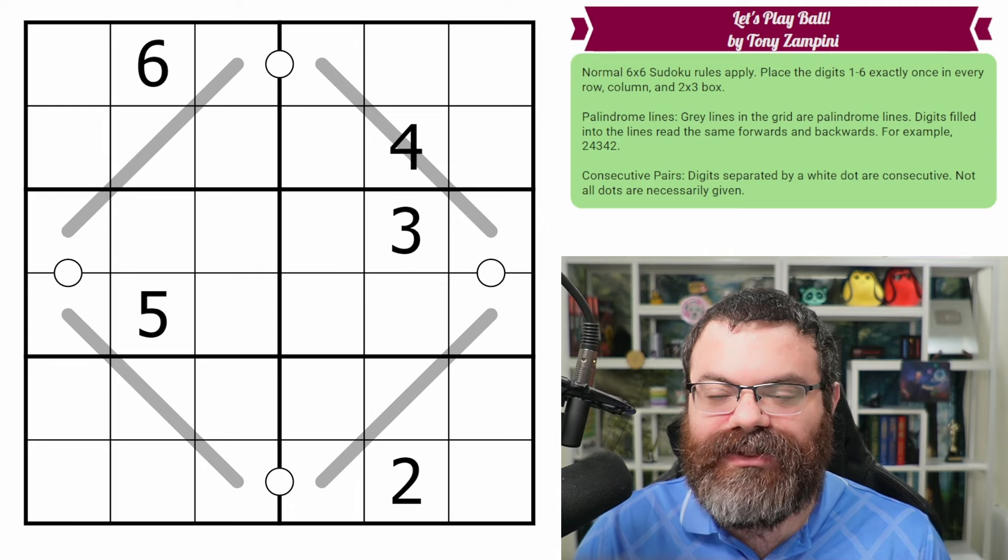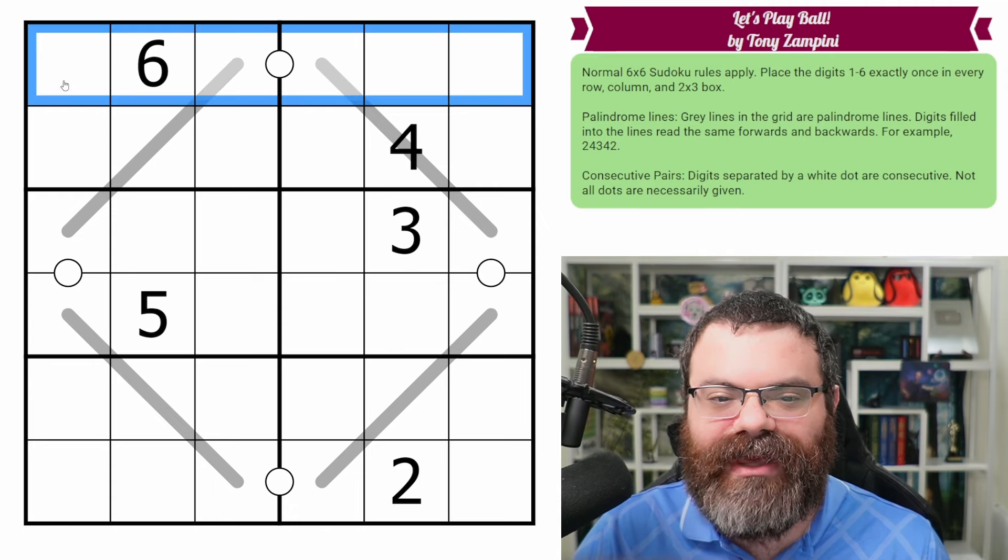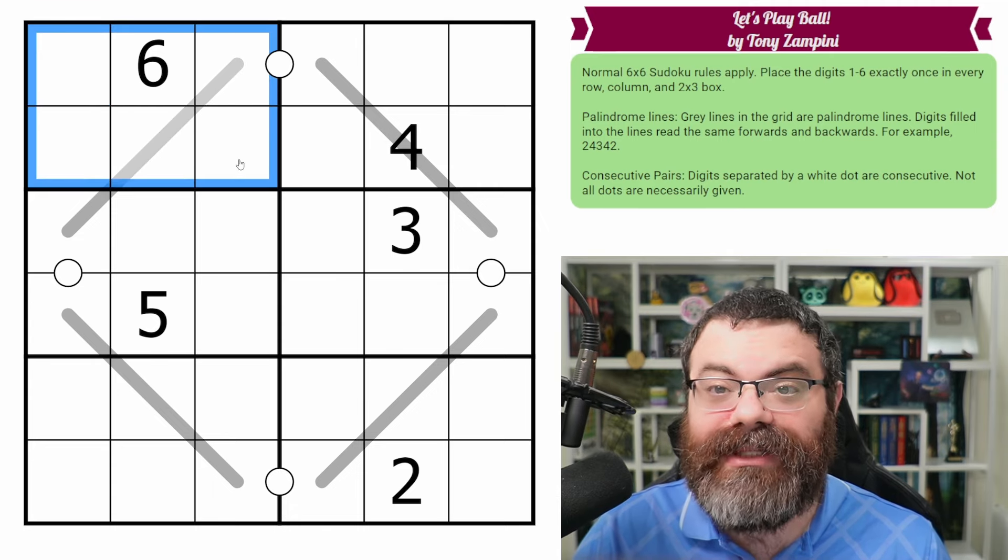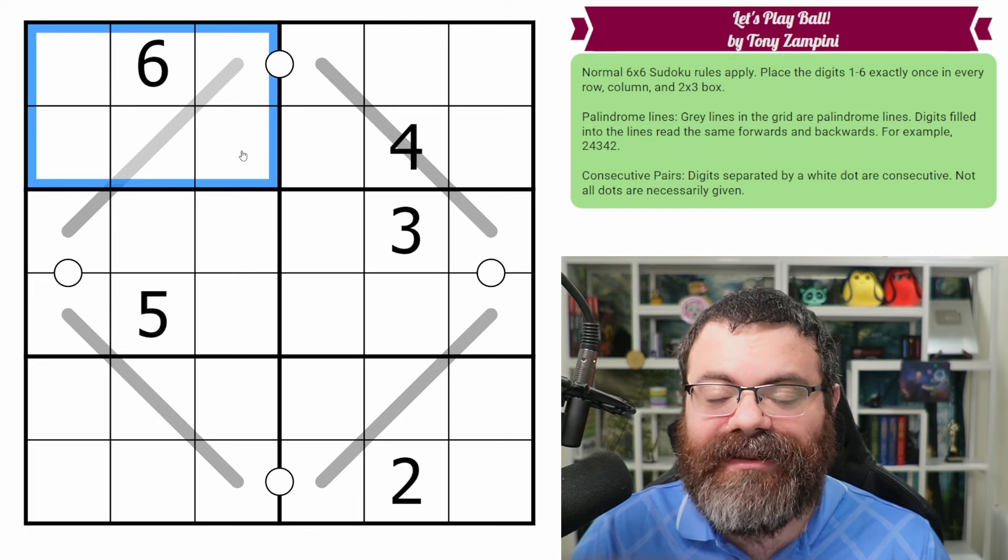We have normal six by six Sudoku rules, meaning in every row, every column, and every two by three box, we are placing the digits one to six exactly once each.